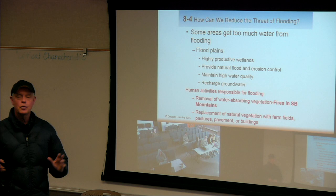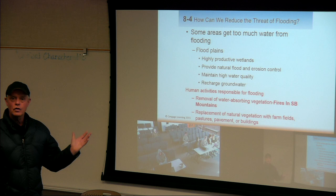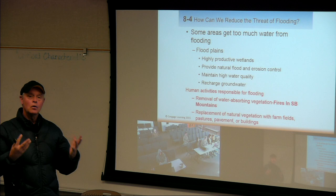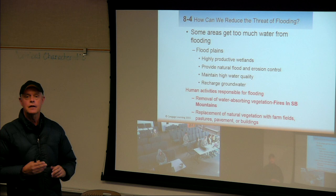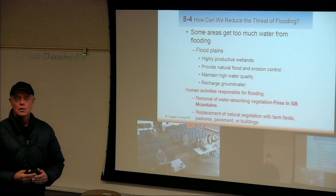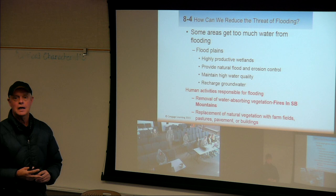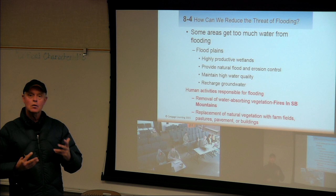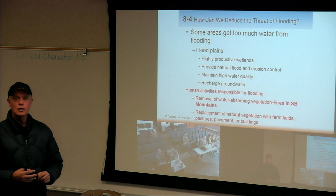We've changed floodplains a lot — we've put up big levees and channelized rivers. The LA River is just concrete banks most of the way down. In those floodplains there are also highly productive wetlands. That's where all the young animals, bugs, fish, and shellfish have their nursery. They provide natural flood and erosion control. In New Orleans, one reason for that big flood was their wetlands had been decreased and weren't in good shape. Wetlands basically act as a big sponge, maintain high water quality, and can recharge groundwater.